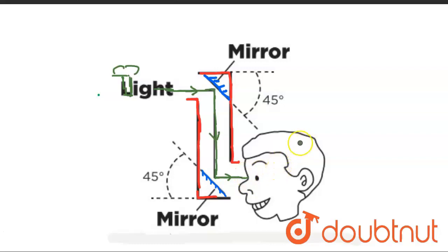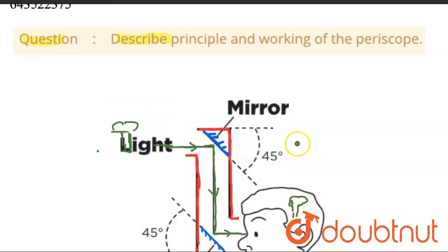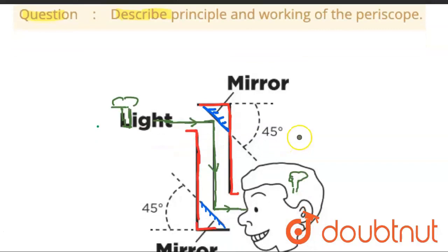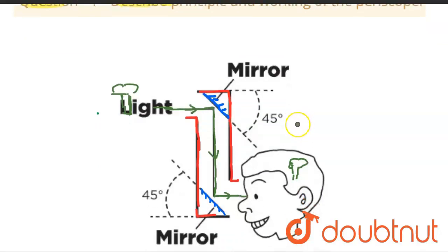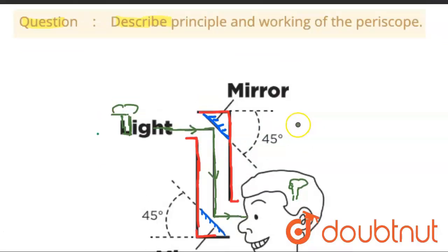So this person can see that tree. This is used for seeing objects which are not in direct vision—you can see those objects which are not in direct view.